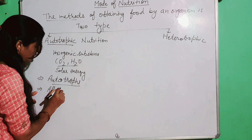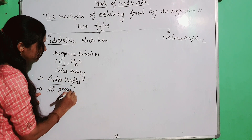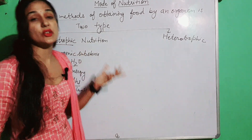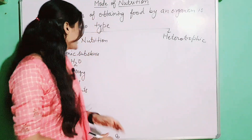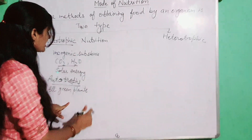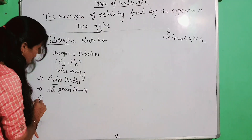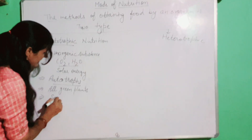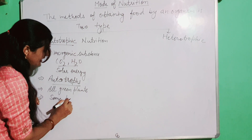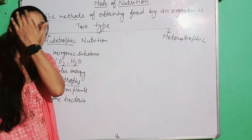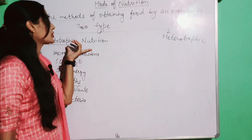Examples of autotrophic mode of nutrition include green plants, which follow autotrophic mode of nutrition. There are also some bacteria — almost all of them apply autotrophic mode of nutrition. The organisms that perform autotrophic nutrition are called autotrophs.